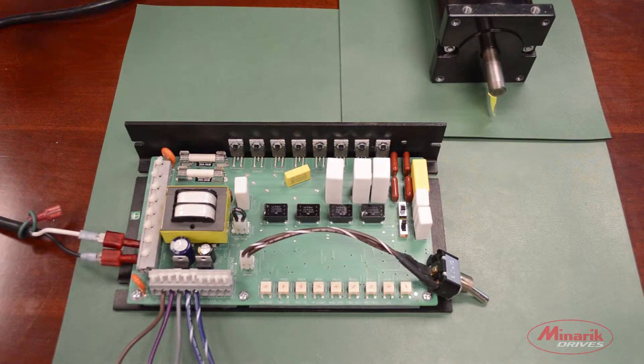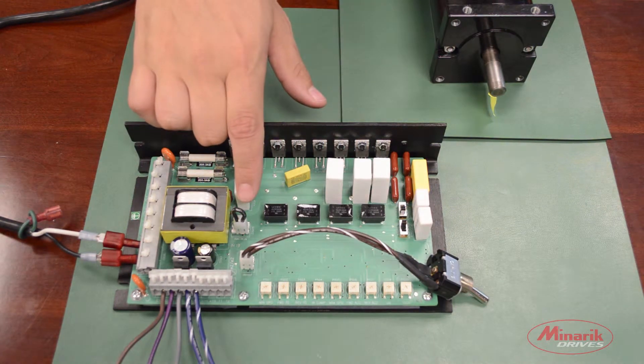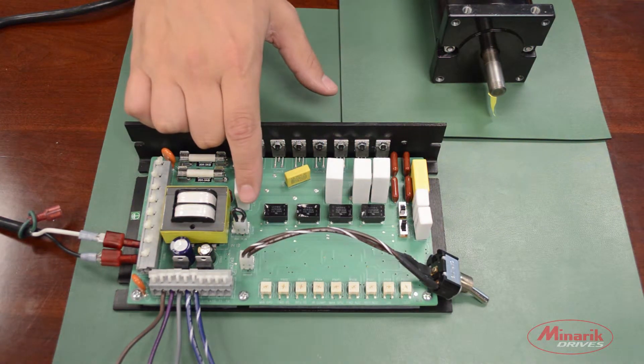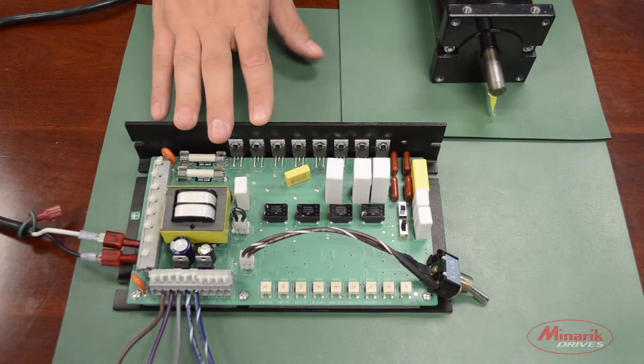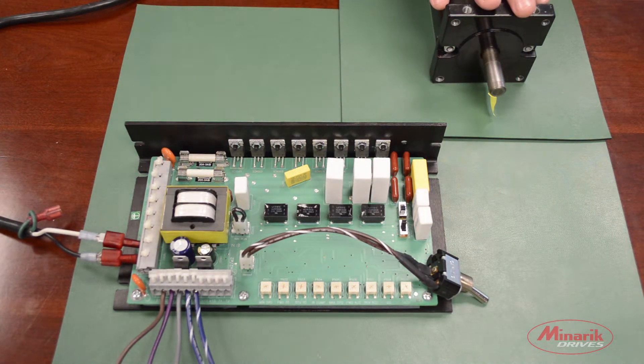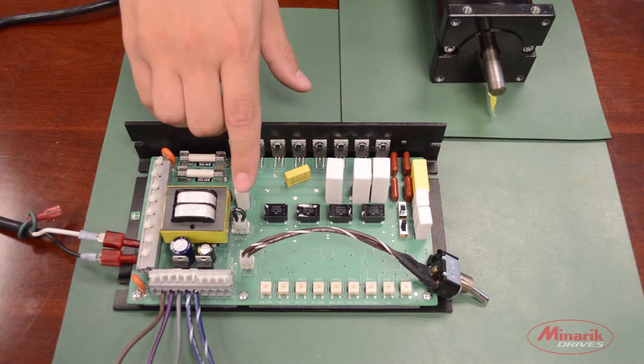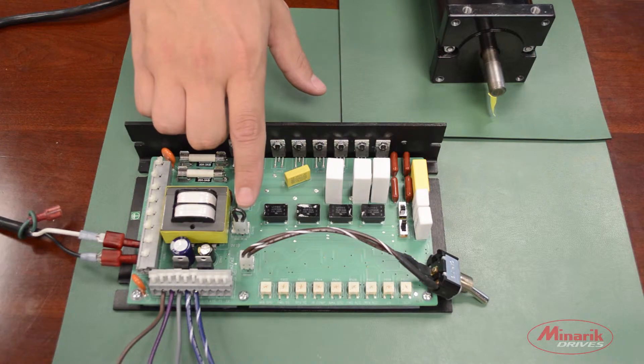Next we'll look at the jumper located next to the transformer on the drive. This sets whether the drive is in run mode or coast to stop mode. In coast to stop mode the drive will disconnect the motor from power and let it coast to stop. So to operate the drive we need to have the drive in run mode which is the factory default setting.